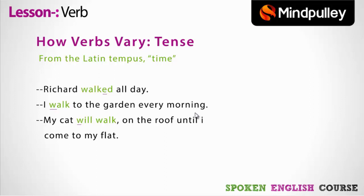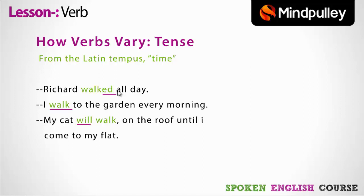'I walked to the garden every morning' — simple past tense, past participle form of the verb. 'My cat will walk on the roof until I come to my flat' — simple future tense, base form of the verb. Yaani ki jab tense change hota hai, toh verb bhi change ho jaati hai. Verbs change according to the tense, according to the time in which an action was performed.